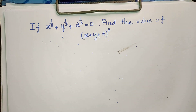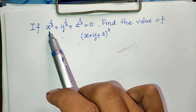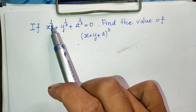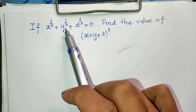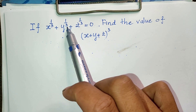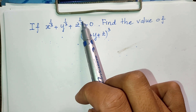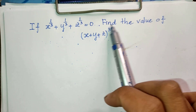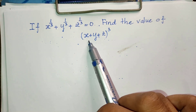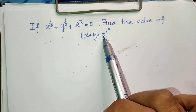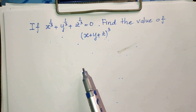Hello everyone, welcome to my YouTube channel. Today I have one exercise: if x to the power 1/3 plus y to the power 1/3 plus z to the power 1/3 equals 0, find the value of x plus y plus z, all to the power 3. Do you know how to solve this?